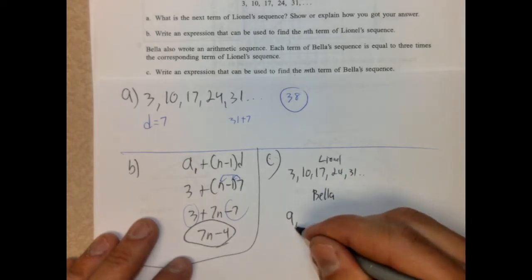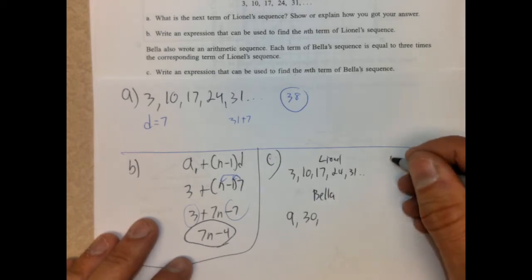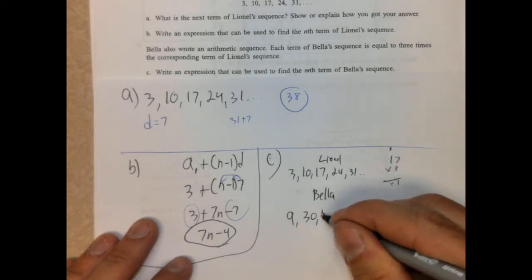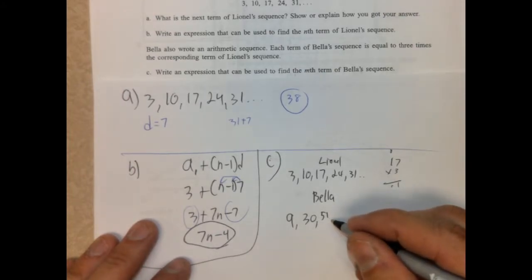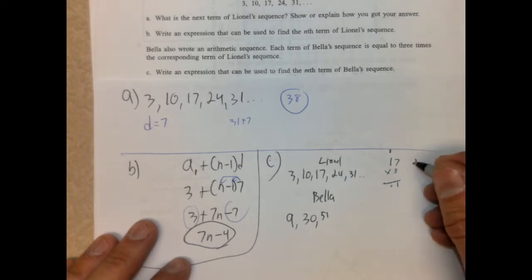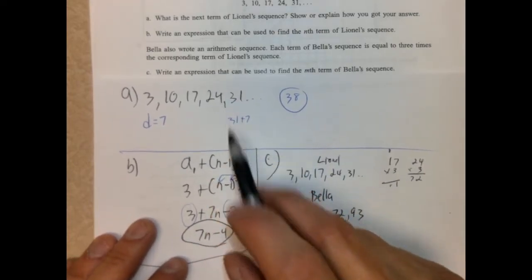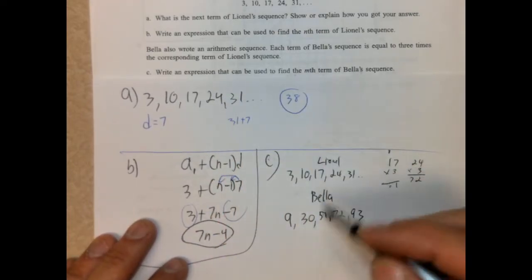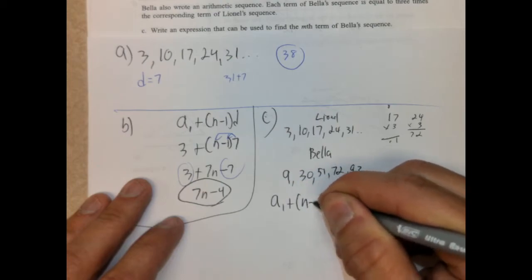So Bella's going to have 3 times this. So 9, 30, 3 times 17, 51, this is 72, 24 times 3, we're going up by 21, 93. Okay. So, alright, we have enough to do this, actually. So we're doing the Nth term. So, again, we're at the sequence here. Or the formula, rather. So a sub 1 plus N minus 1 times D. We're going to do N, actually. They want us to use the Nth term.